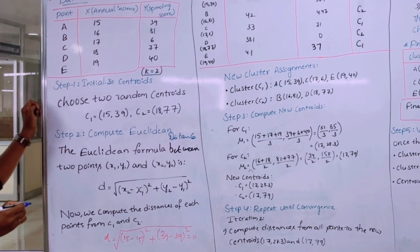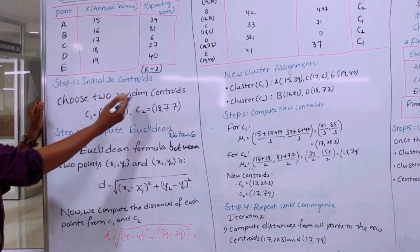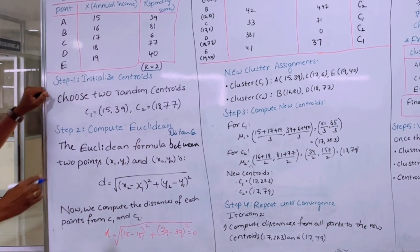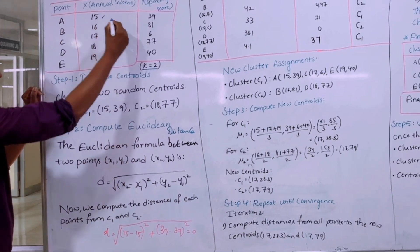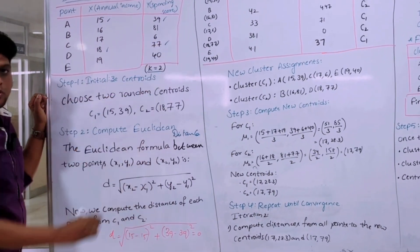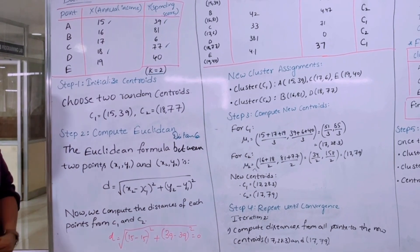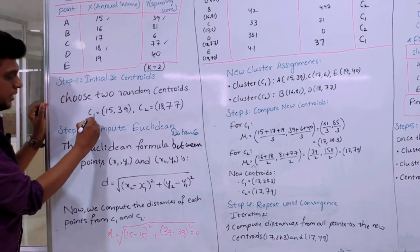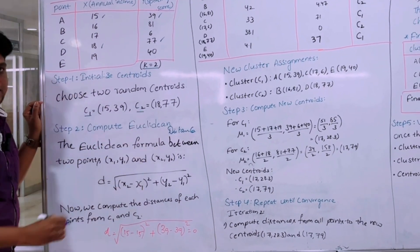Then to initialize the centroids we should choose two random centroids. So here I am choosing 15,39 and 18,77. So randomly I am choosing these two centroids. It can be taken as C1 and C2.